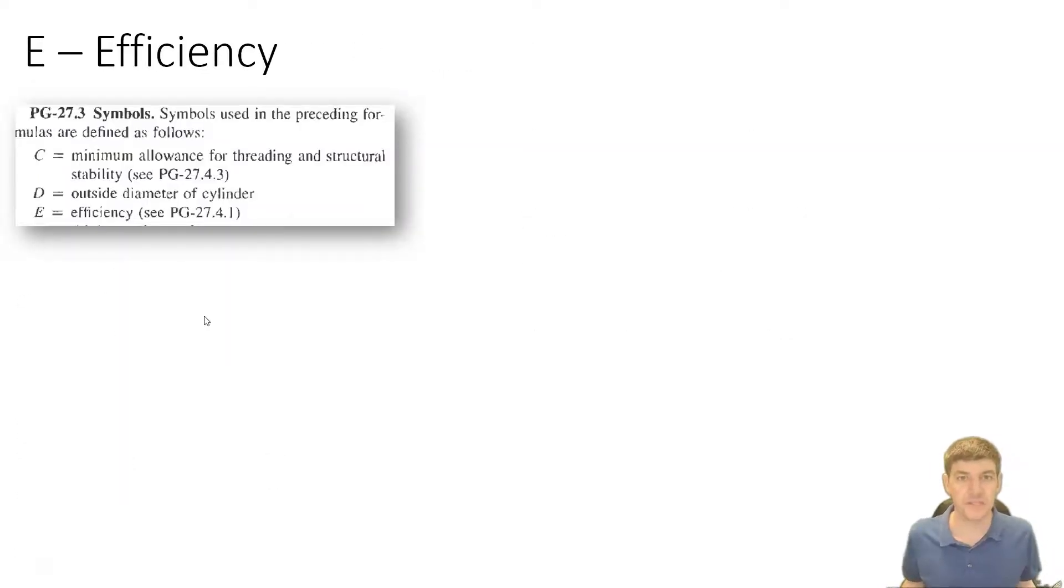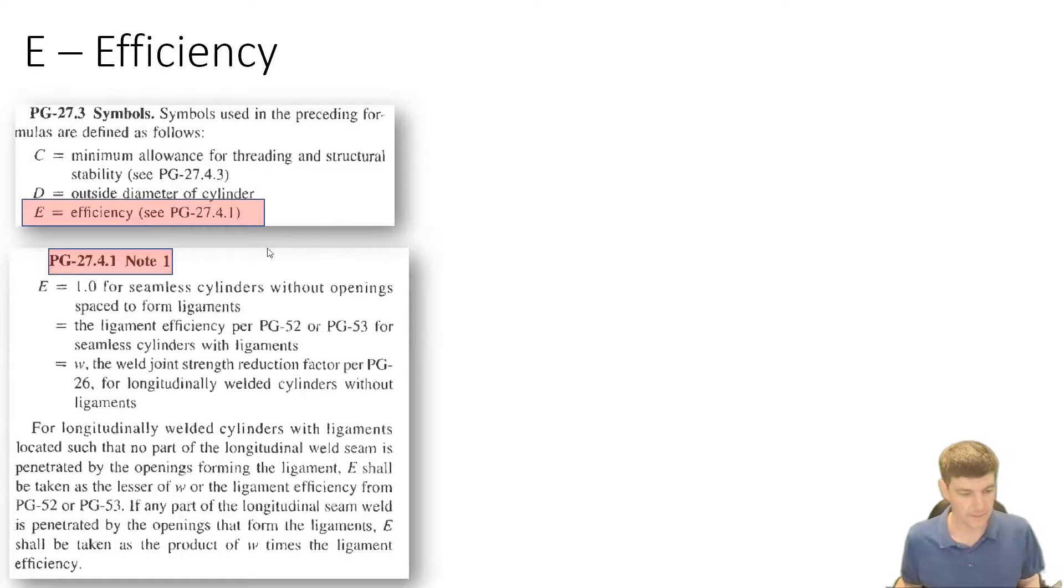Okay, so let's talk about efficiency. So what is efficiency? We have this capital E value. So be careful because we had a lowercase e in the last one. That was our expanded tube ends. So be careful you're not confusing the capital E with the lowercase e. So capital E says it's efficiency. Okay, so let's find out what that really means. PG 27.4.1. And if we look that up in our code document, then we're going to find a paragraph here. And it says capital E is equal to 1.0 for seamless cylinders without opening space to form ligaments. And the next statement, e is equal to the ligament efficiency. So I guess we've got to figure out what is a ligament.